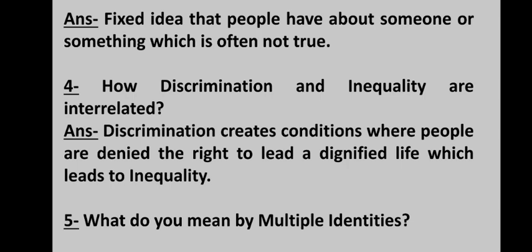The next topic is how discrimination and inequality are interrelated. Discrimination can be on the basis of religion, race, caste, gender and region. Discrimination also leads to inequality because all people are not allowed to lead their life in a respectful manner. Discrimination also creates differences between persons on the basis of wealth — poor people are not able to fulfill their basic needs and are also treated badly. They don't get respect, and this discrimination leads to backwardness in society.